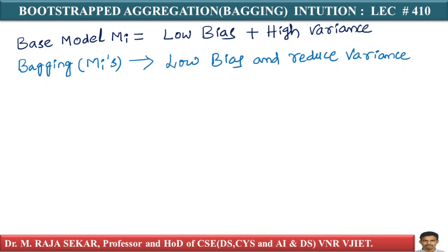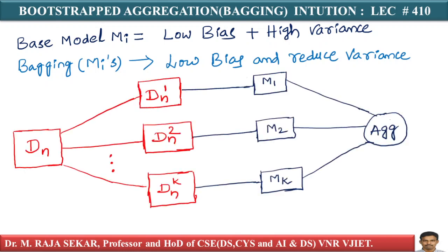Why does variance reduce? Because of the combination of bootstrapping and aggregation. By removing a bunch of points, the overall model has not changed much. Some of the models M1 through Mk may change, but only a subset of them — and since we are aggregating results using majority vote, mean, or median, the final result does not change significantly.